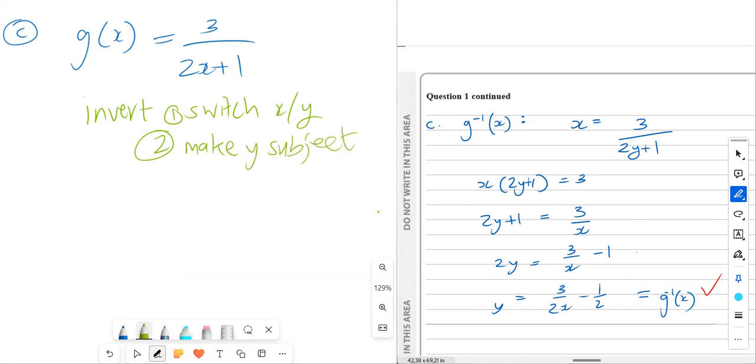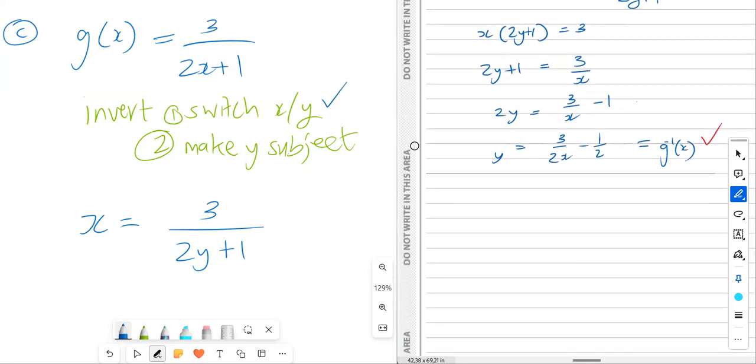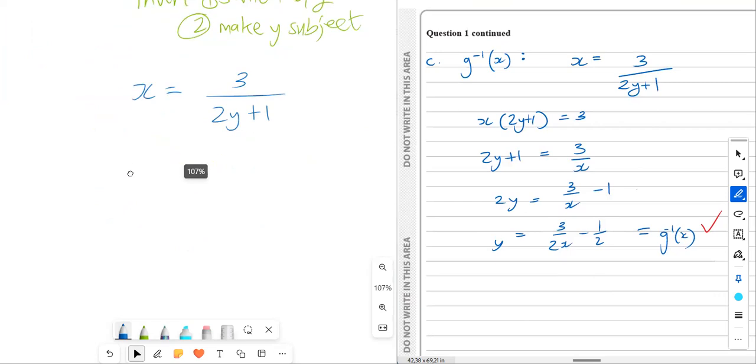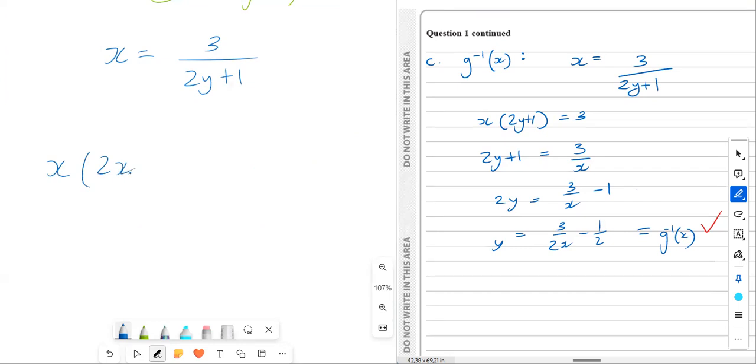So switch x, y. Remember, g of x is just another way of writing y. So it will be x is equal to 3 over 2y plus 1. Now we have to make y the subject. So that's number one done. I make y the subject. And so I want to make y the subject. First one, just bring the bracket over. So times both sides by 2y plus 1 equal to 3. If you know how to do this quickly, you can just switch this. But now we divide both sides by x. So divide both sides by x. This was times both sides by 2y plus 1 over here.